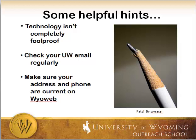Check your UW email regularly. If you're in an eCompanion course, you'll receive any emails that your instructor sends you most likely at that email address. If you're in a Canvas course, you can pick and choose where you receive messages sent through Canvas. If you watch that student orientation video, it will show you that. Also make sure your address and phone number are current on YOWEB because we may still need to mail something to you.